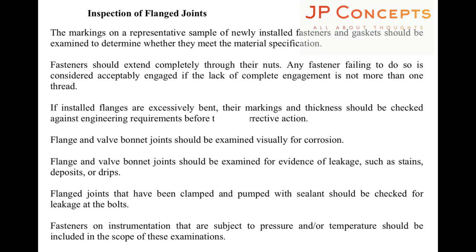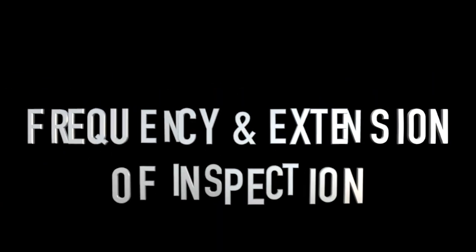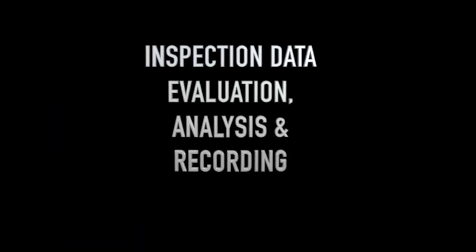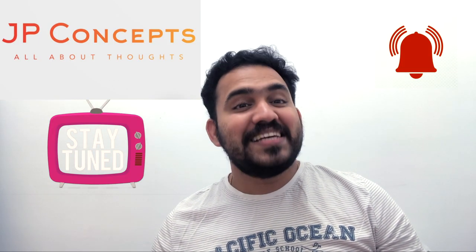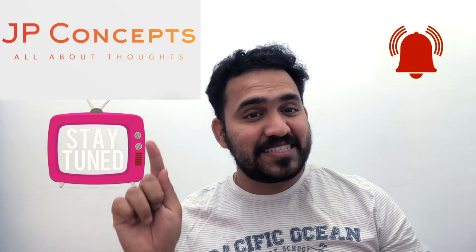For inspection of flanged joints, the markings on a representative sample of newly installed fasteners and gaskets should be examined to determine whether they meet the material specifications. Please note that throughout these presentations, not everything is explained in detail — a deep reading of API 570 code is required. The guidance here is on how to approach the API 570 code. In the next session, we will discuss frequency and extension of inspections, and inspection data evaluation, analysis and recording. Stay tuned, please don't forget to subscribe to the channel and press the bell icon.